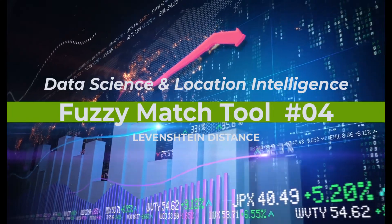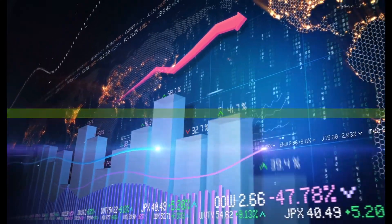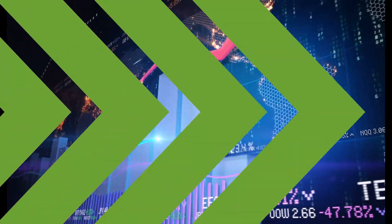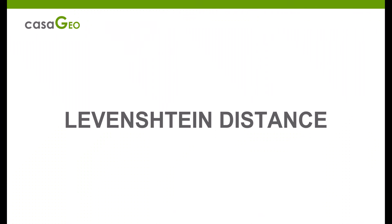Hello, my name is Tazen from Casa Geo, the data science and location intelligence company with part 4 on the fuzzy match tool where we look at Levenshtein. I love this algorithm because it is so simple and easy to follow. So how does Levenshtein work?